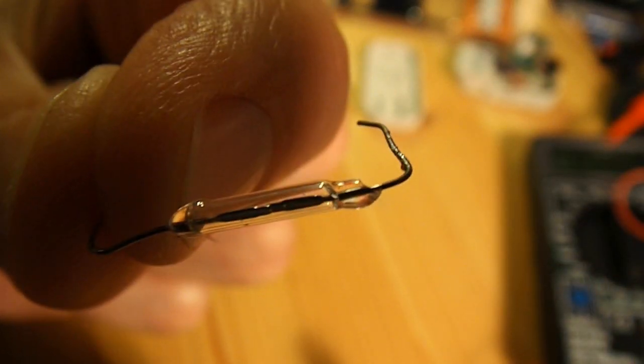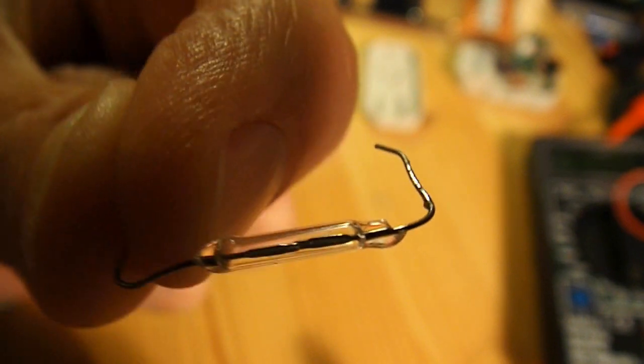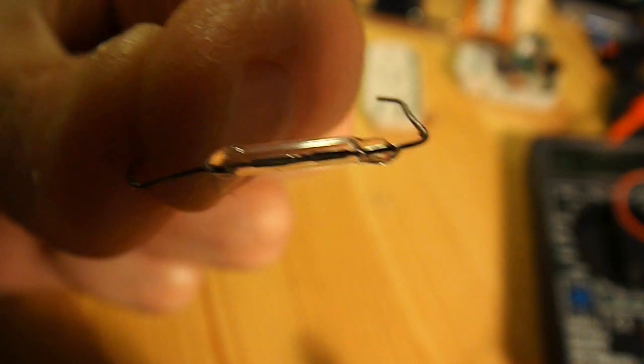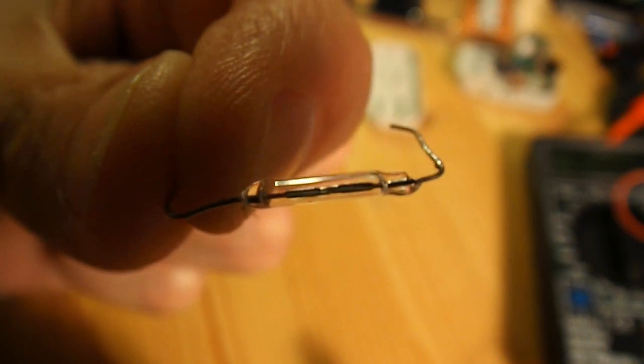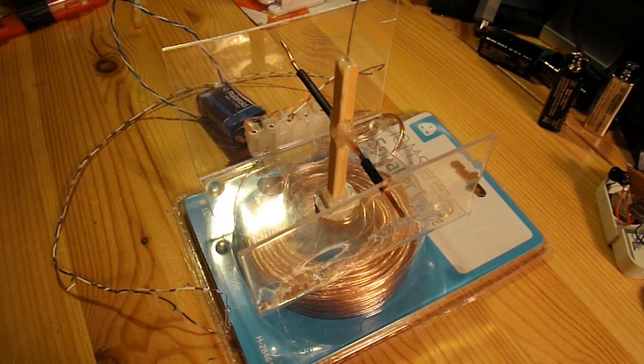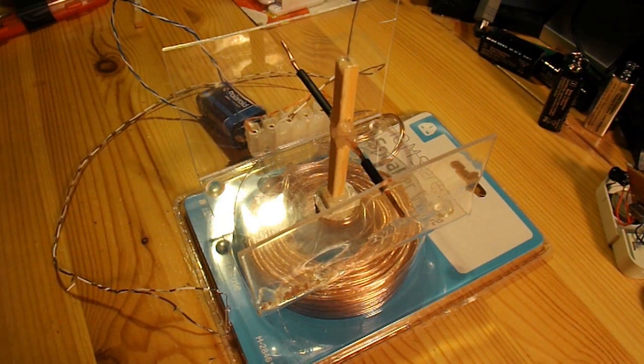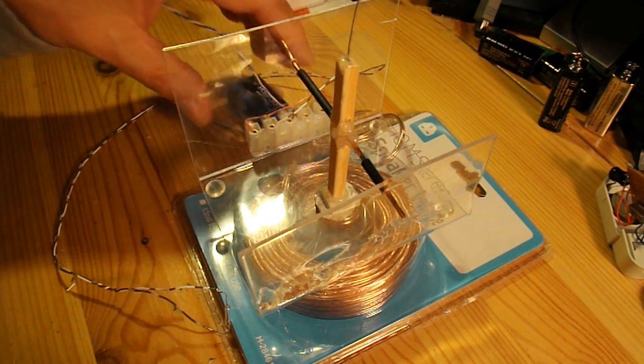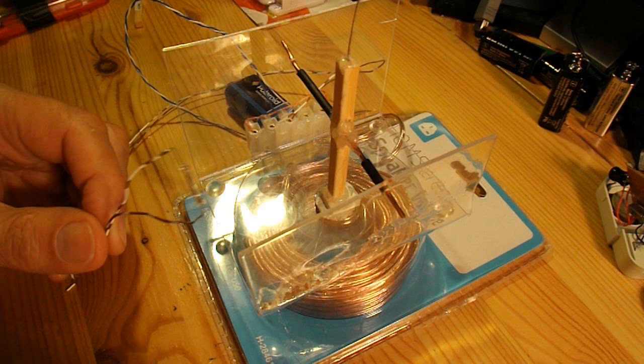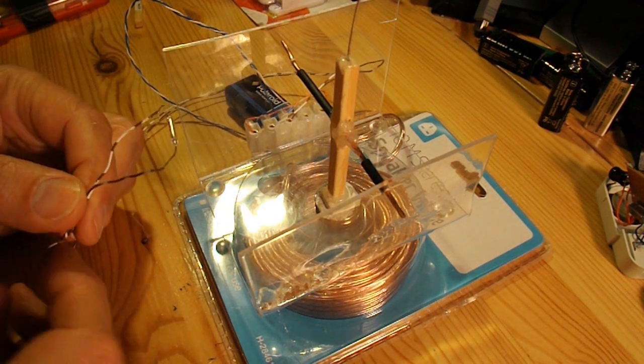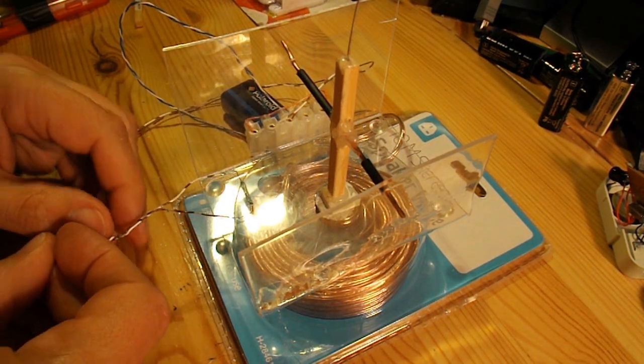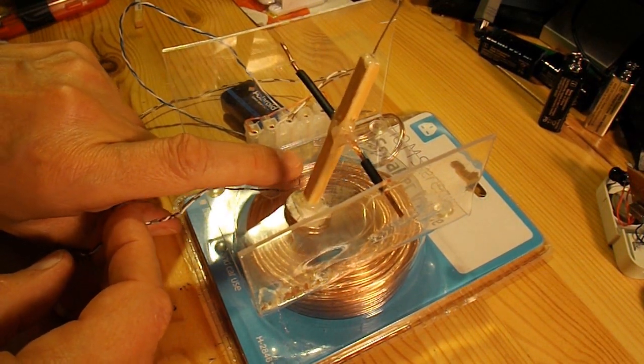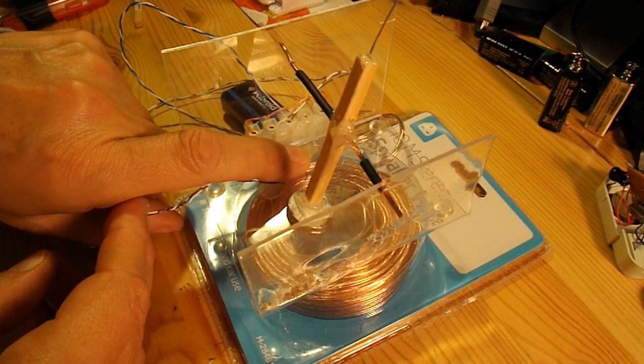Right, there's our little reed switch, desoldered from the alarm. So we'll see if we can insert that in our circuit somewhere. Right, I've done nothing to the coil. I've just added a 9V battery as the power supply. And I've got my reed switch on a floating bit of wire that I can position until I get the right reaction from it.